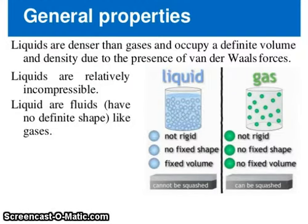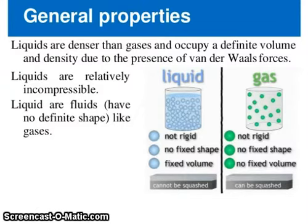Looking at this figure comparing liquids and gases: liquids are not rigid, have no fixed shape, but have a fixed volume. Gases are not rigid, have no fixed shape, and no fixed volume.